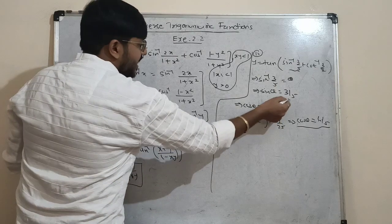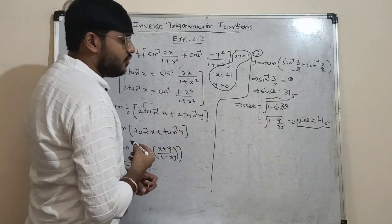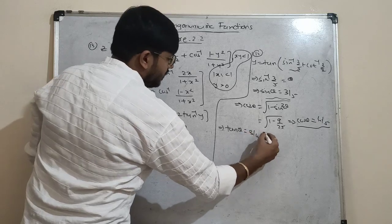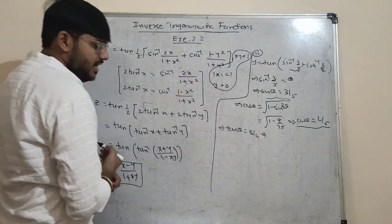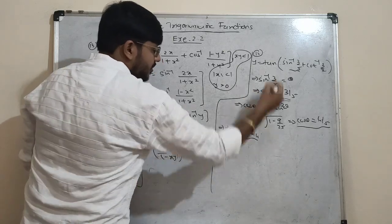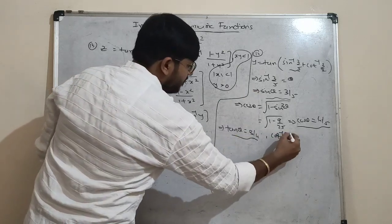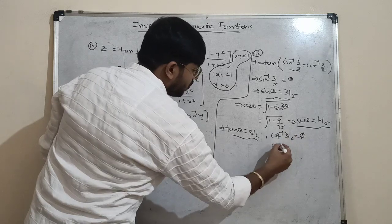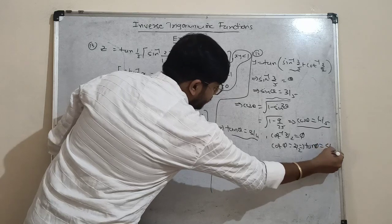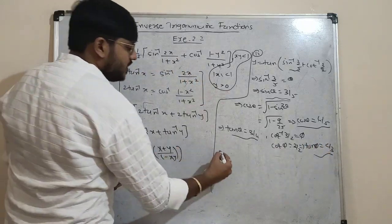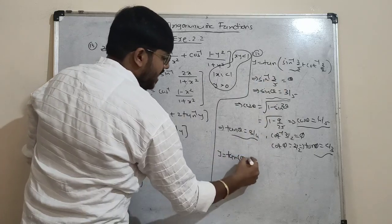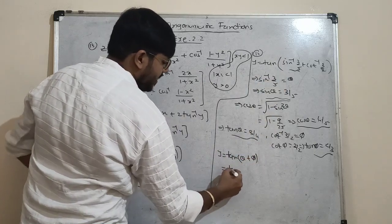With sin θ = 3/5 and cos θ = 4/5, tan θ = 3/4. Also, let cot⁻¹(3/2) = φ, so cot φ = 3/2, giving tan φ = 2/3. Now y = tan(θ + φ).